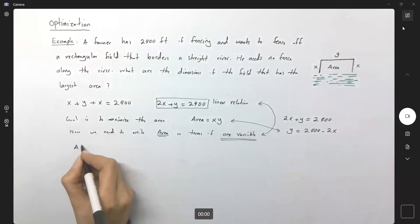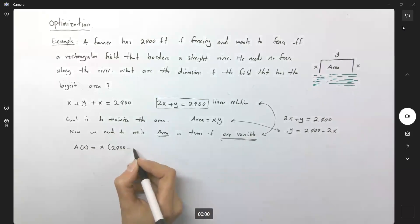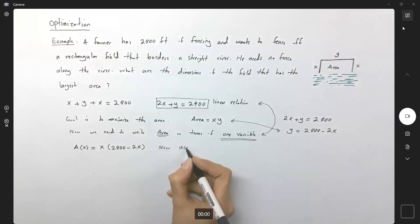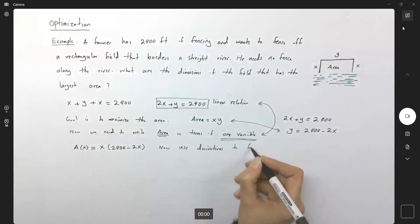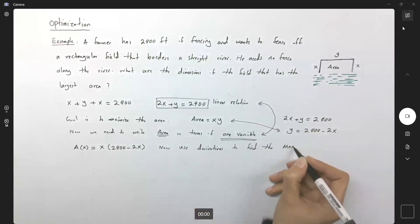So area as a function of x can be written as x times y, but y is 2,400 minus 2x. So what are we trying to do? We're trying to maximize this function or we're trying to use the derivative to find a critical point and find the x value that gives us the maximum function, maximum of this function. Now, use derivatives to find the maximum value.